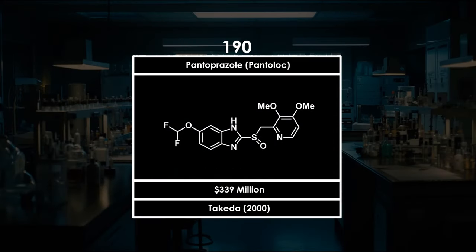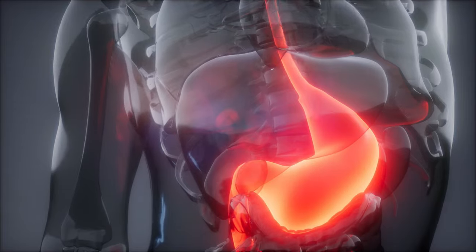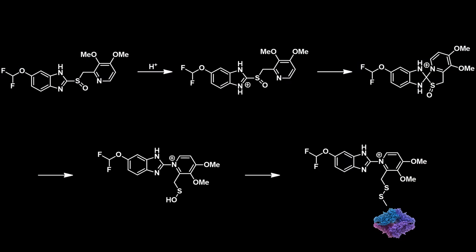Pantoprazole, sold under the brand name Pantoloc, is a proton pump inhibitor. These compounds reduce stomach acid production by irreversibly inhibiting the stomach's proton-potassium ATPase proton pump. This reduction in stomach acid production is beneficial in treating stomach ulcers and acid reflux. Pantoprazole has an interesting mechanism of action, which was discovered during development when it was realized that active compounds were not stable in solution. This led to experiments showing that in weakly acidic environments, pantoprazole can rearrange to form a reactive sulfur species, which can then form a covalent bond with one of the cysteine residues in the enzyme.